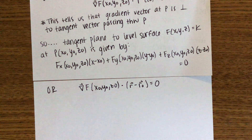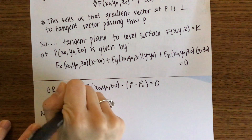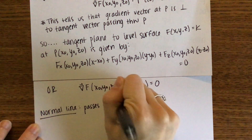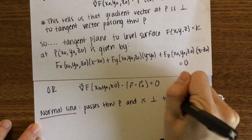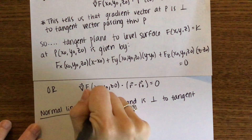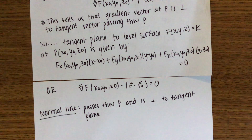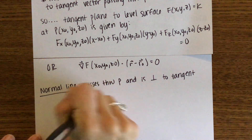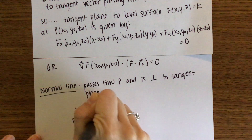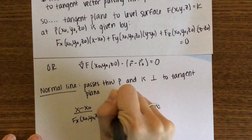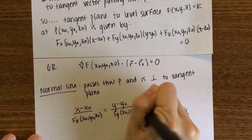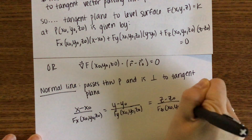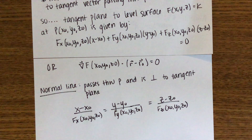Oftentimes when asked to find the tangent plane, you'll also be asked for the normal line. The normal line passes through point P and is perpendicular to the tangent plane — which means it involves the gradient. Its equation in symmetric form is: (x − x-naught) over the partial with respect to x equals (y − y-naught) over the partial with respect to y, and so on for z.